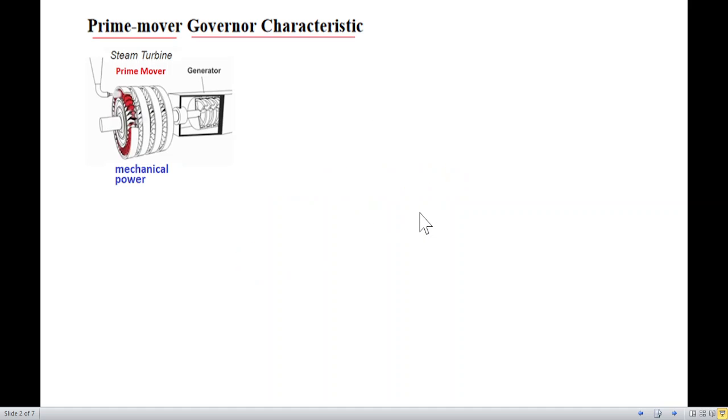So before we go to the question, just recall that for every generator, we got to have a prime mover, something which can drive the generator shaft. This could be a steam turbine, air turbine, or water turbine. The turbine provides mechanical power, and the generator converts that power into electrical.